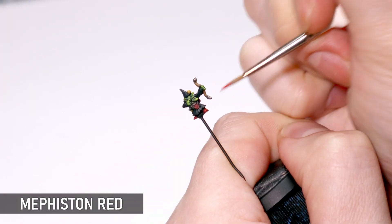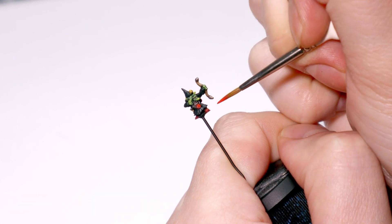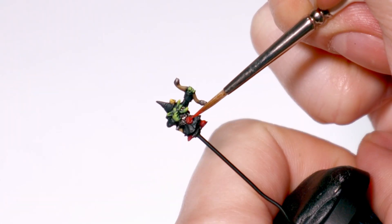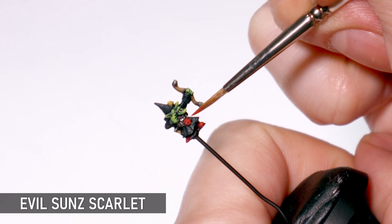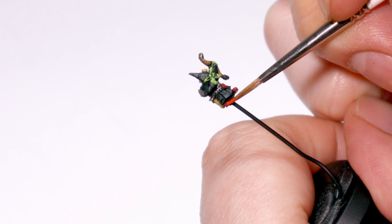The final highlight on the red details is with Mephiston Red, and you could definitely stop there, but I still wanted to come back and give the final highlight with Evil Suns Scarlet. I was even thinking about doing one more highlight after this, but let's not get carried away.